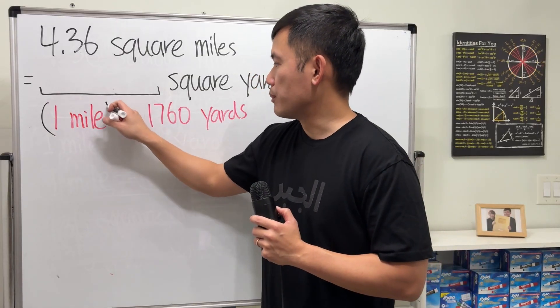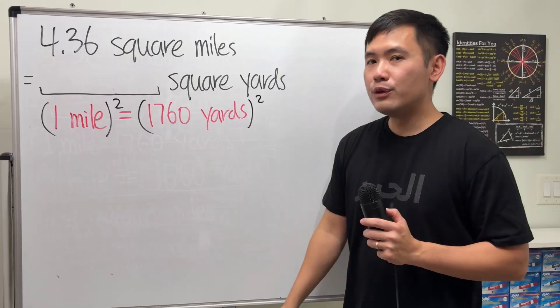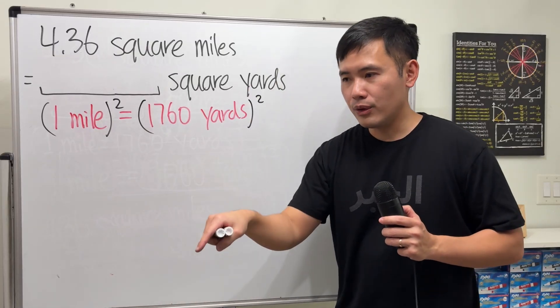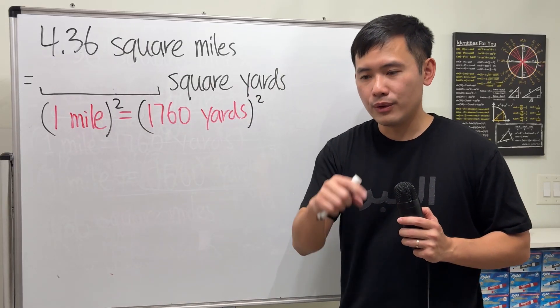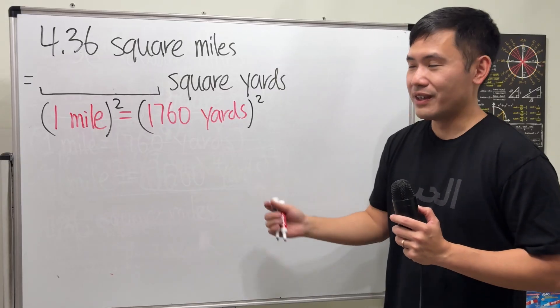We can literally just square both sides. And the reason for that is imagine you have 1 mile and then you multiply by another mile. You can actually get a square out of it in terms of area.